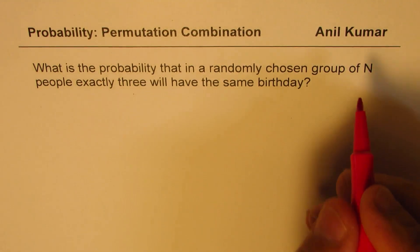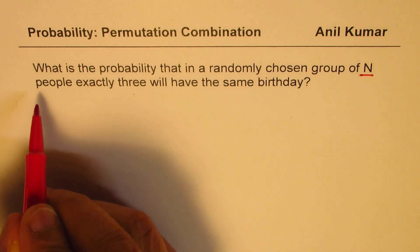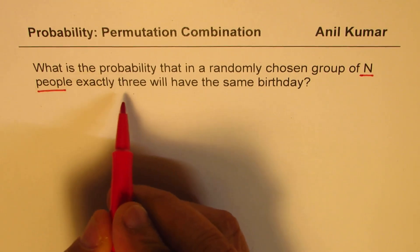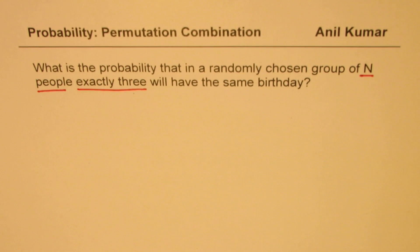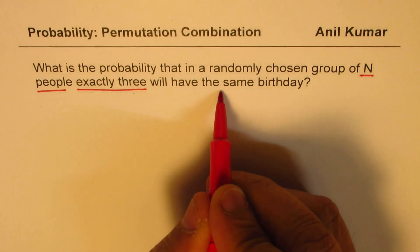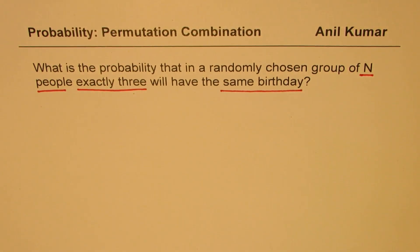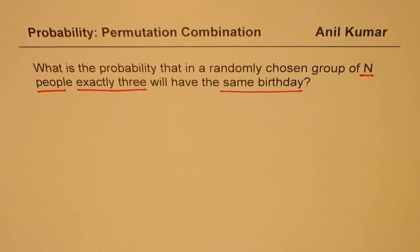We'll provide a general solution since we are taking n people. And exactly three, these are keywords, will have the same birthday. This will actually help you to solve any question relating to exactly one person from the group, two persons or three persons. And then, taking help of these solutions, we could also say when will they have more than three, at least three.